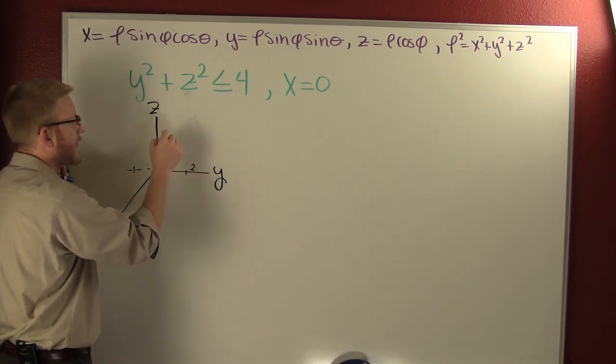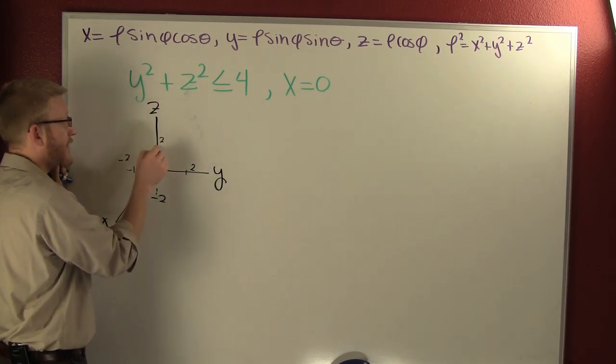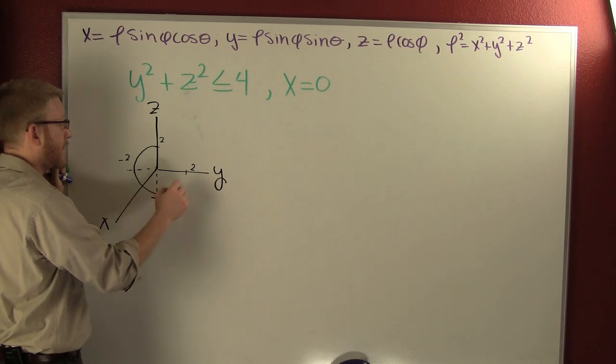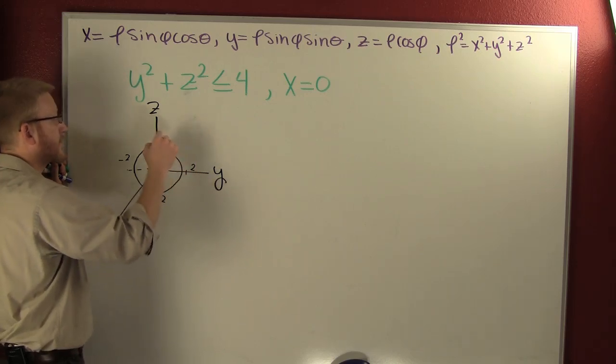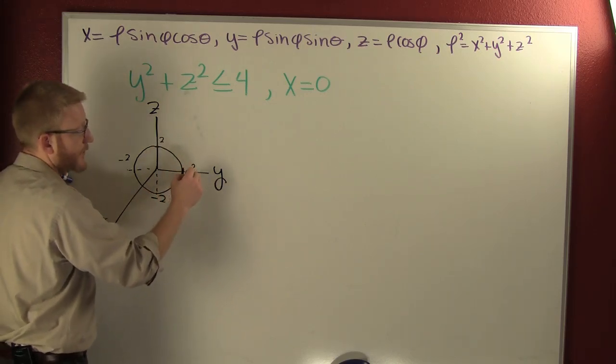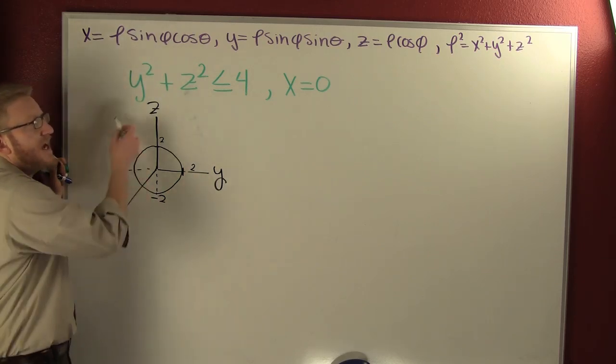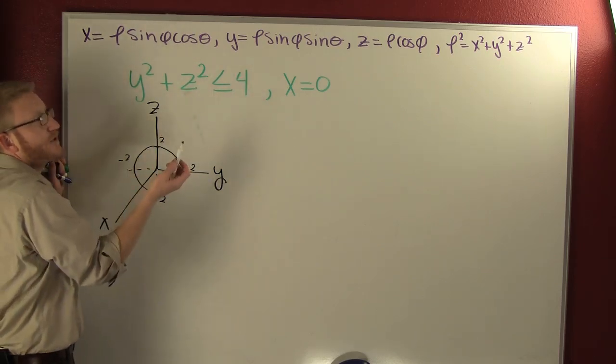Minus 2 there, positive 2 there, positive 2 there, minus 2 there. And it's a circle. Apparently 2 wasn't that far away over here. And that's your restrictions.